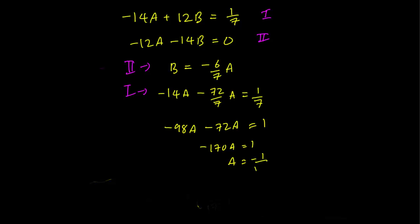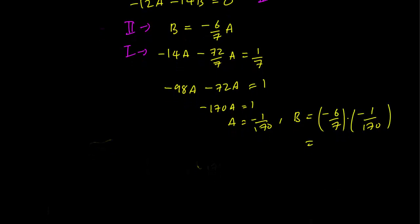And some calculation, we get that B is equal to -6/7 times -1/170. These are multiplied together. And that's going to be equal to 3/595. And that's our A and B.